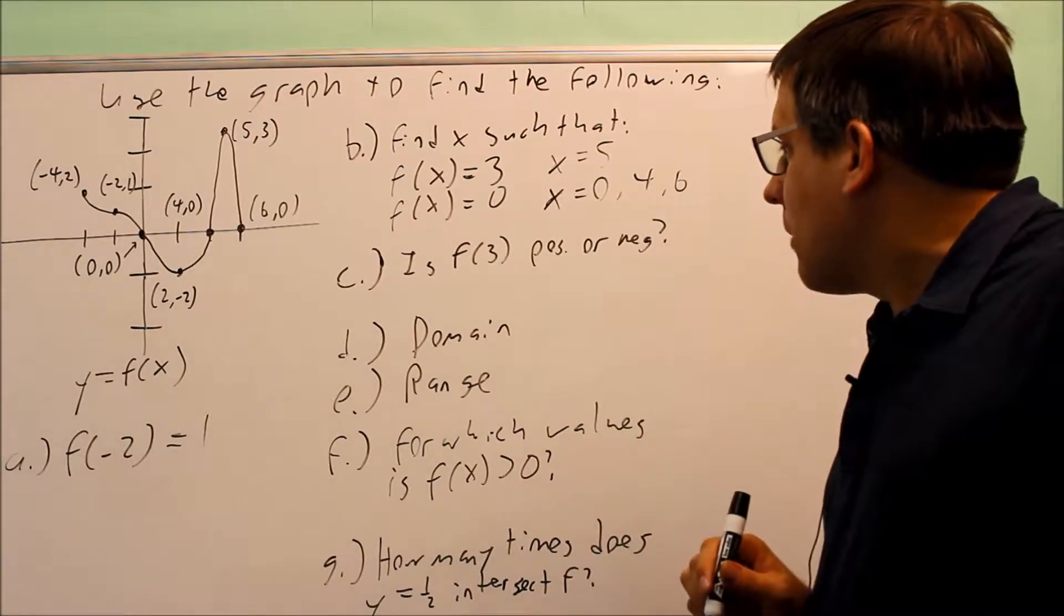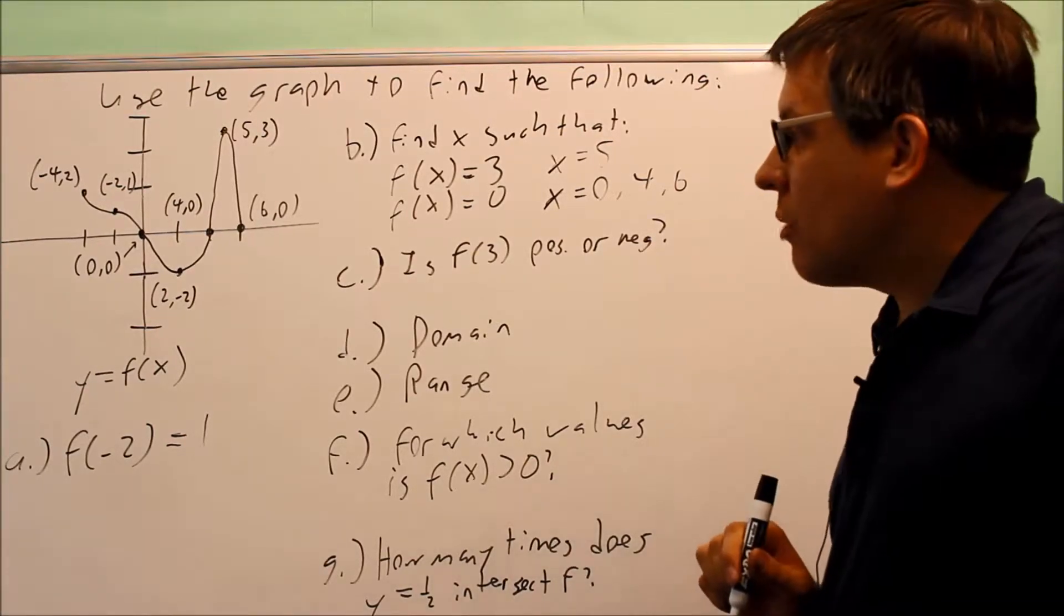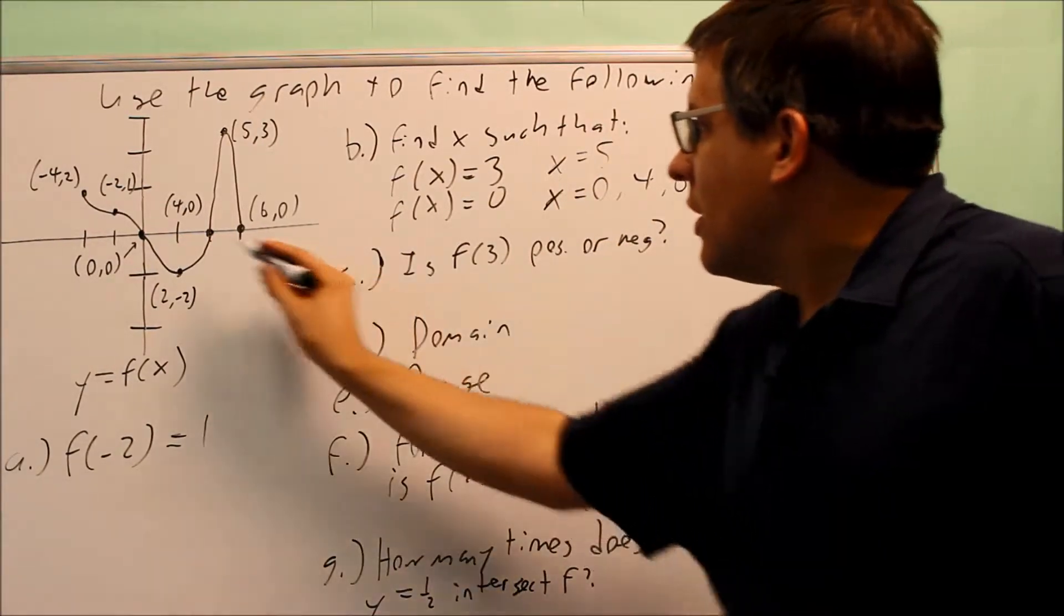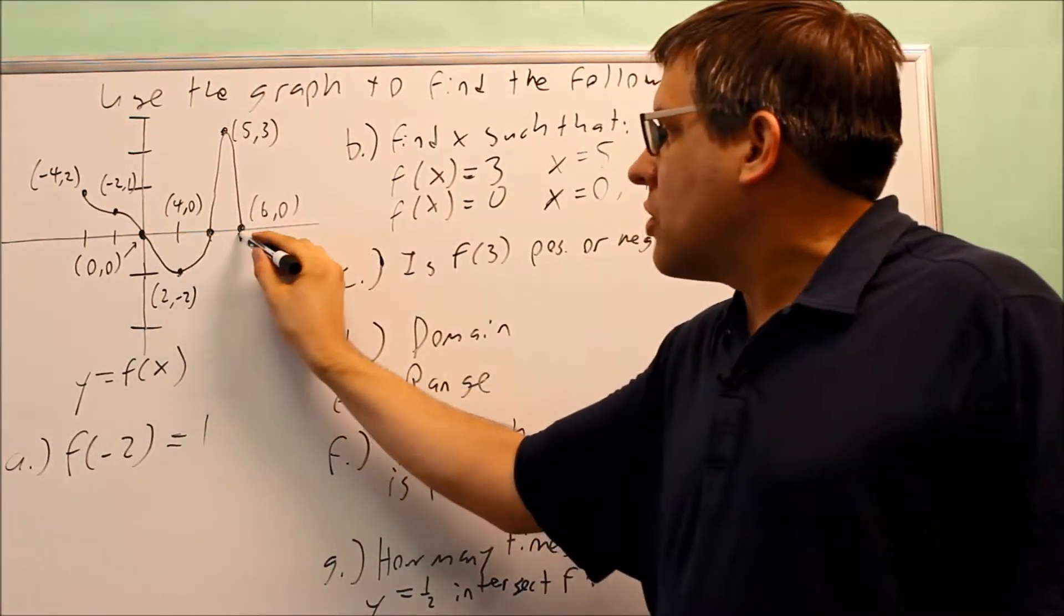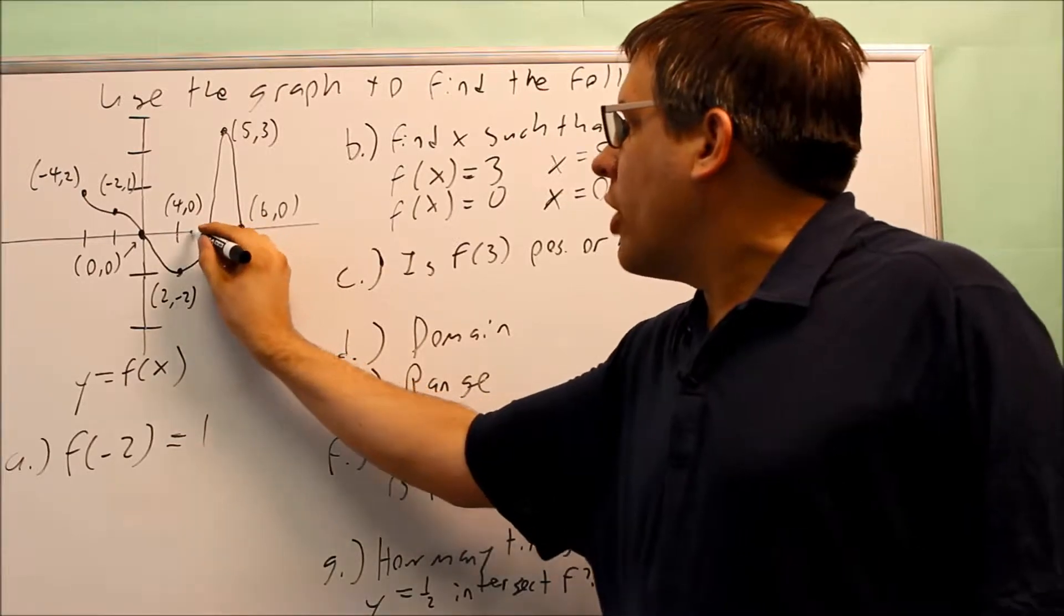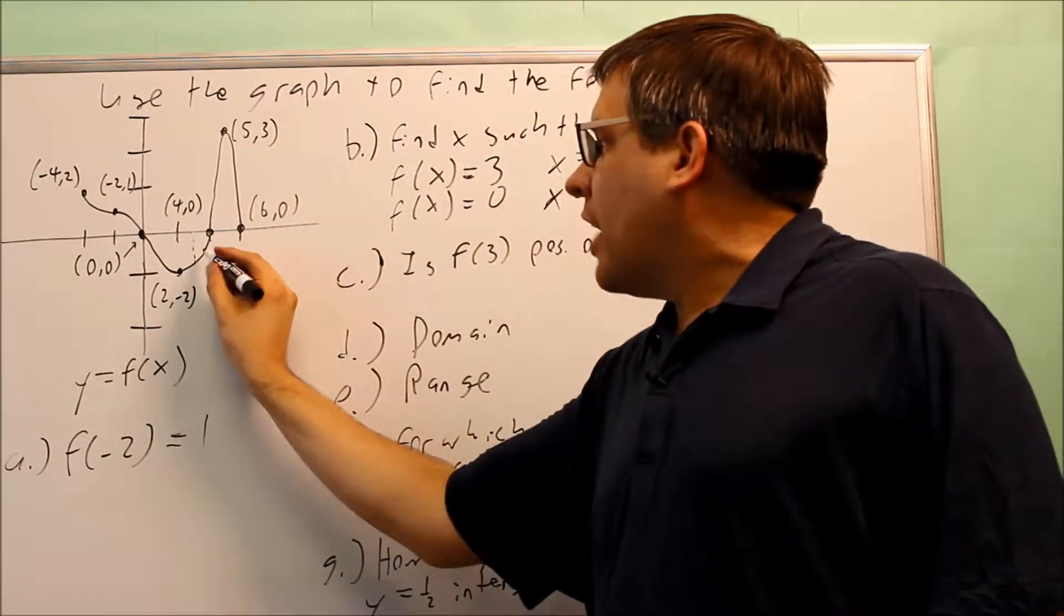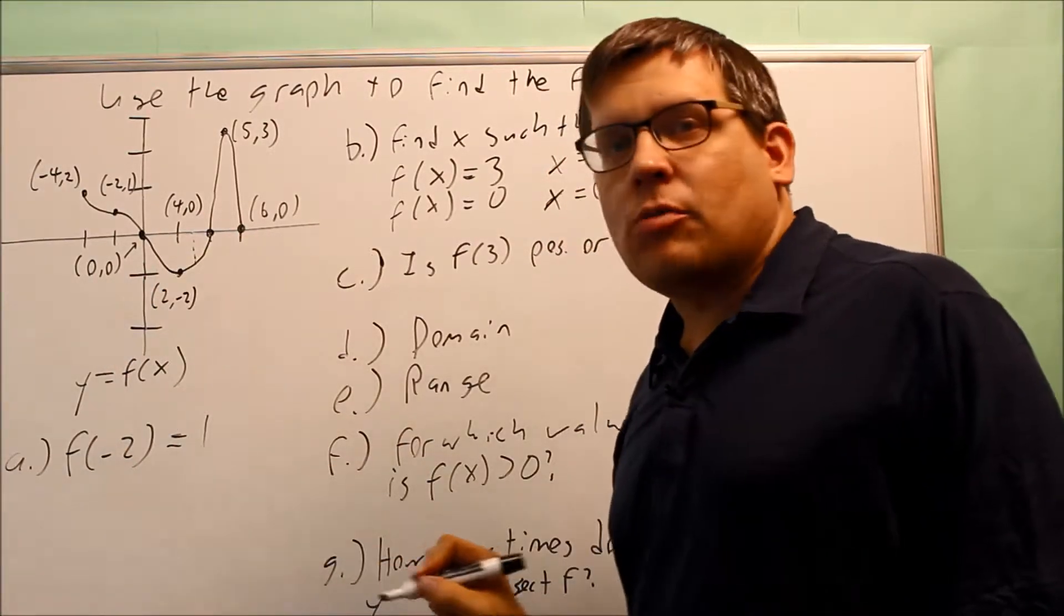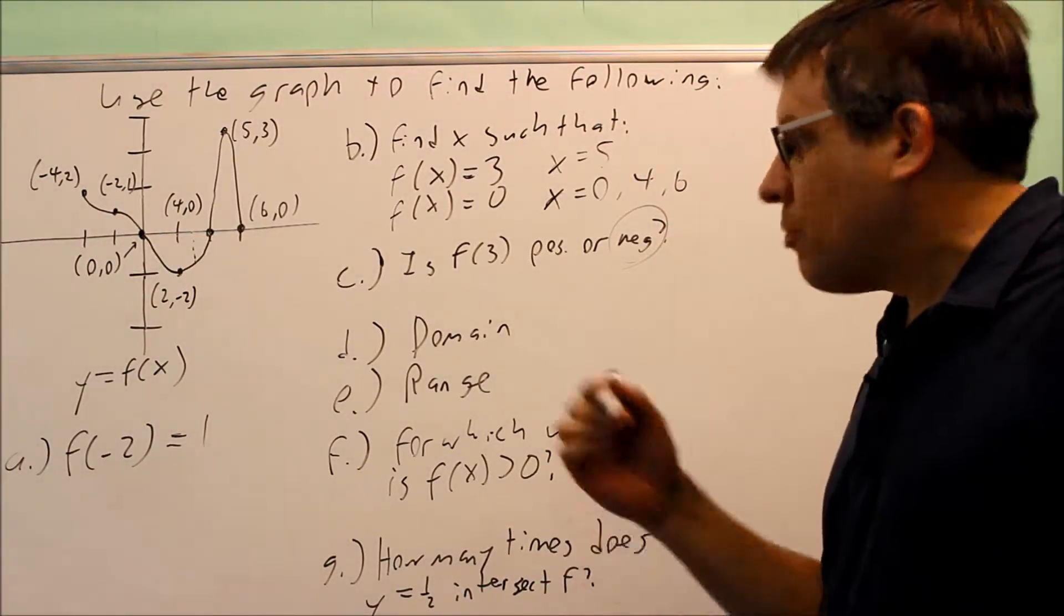Next, is f(3) positive or negative? Remember what this is saying: it's asking us what is the y value when x = 3. I'm going to go to 3 on the graph and see whether the graph is above or below the x-axis. Each of these marks represents 2 units. Between 2 and 4, 3 would be about right here. If I follow this down and draw a dotted line, it's hitting the graph at this point. If I follow that over, that's going to have a negative y value. Therefore, my answer is that f(3) is negative. I don't need to indicate the exact number, just whether it's positive or negative.